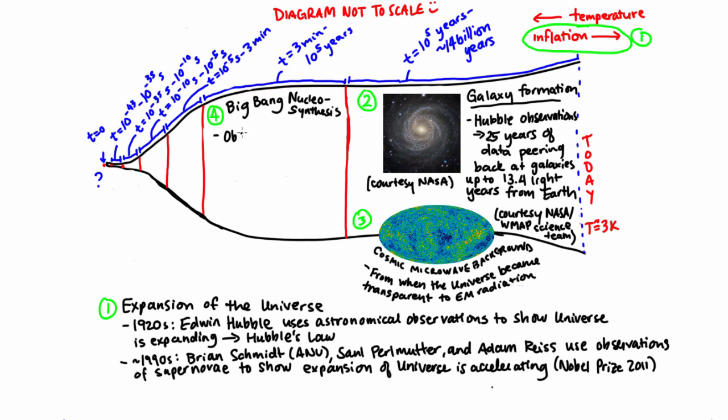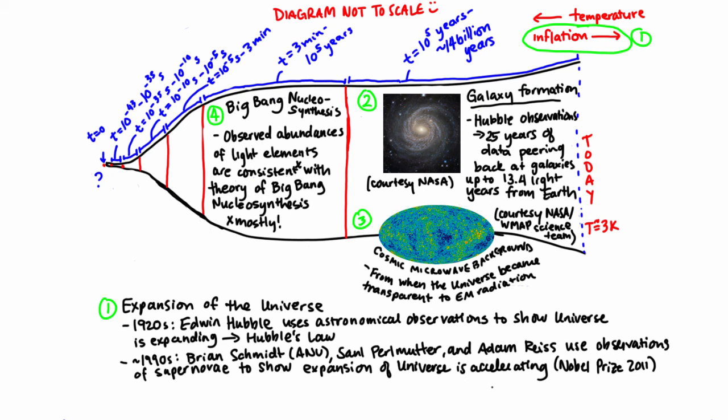By measuring the abundances of these elements in the universe, we've been able to confirm that our theory of Big Bang nucleosynthesis is largely consistent with observation. Basically, the abundances that we observe and the abundances we predict with Big Bang nucleosynthesis theory match up pretty well.